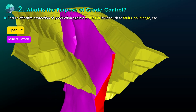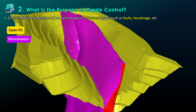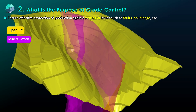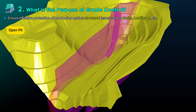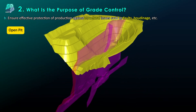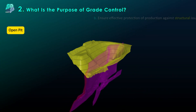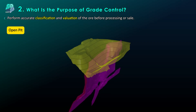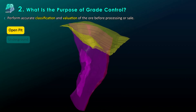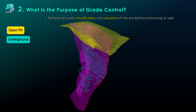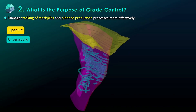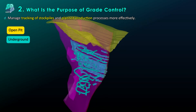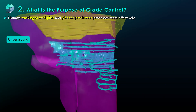A proper grade control process helps you ensure effective protection of production against structural issues such as faults, boudinage, etc. It also allows you to perform accurate classification and valuation of the ore before processing or sale, and to manage tracking of stockpiles and planned production processes more effectively.